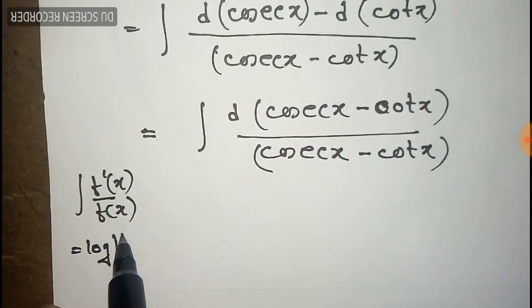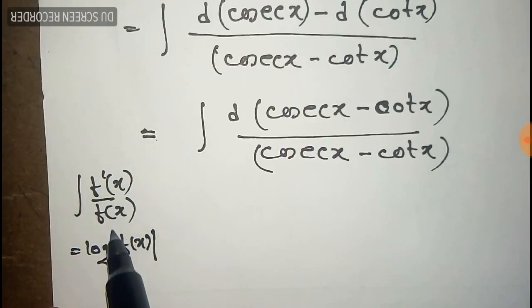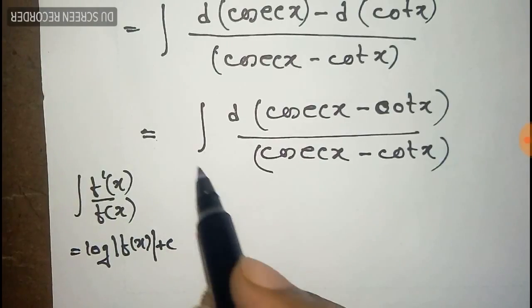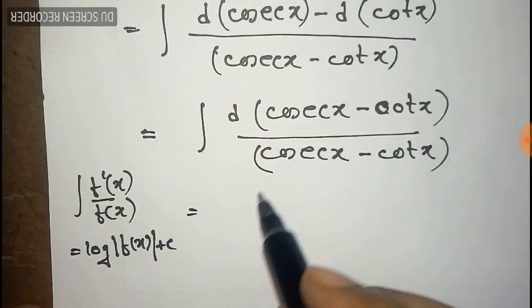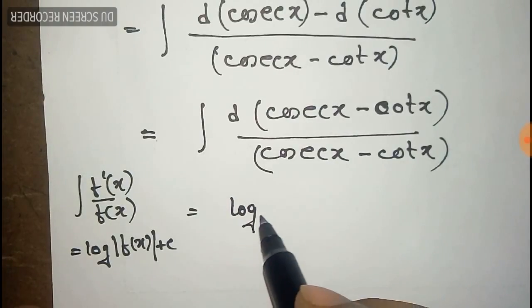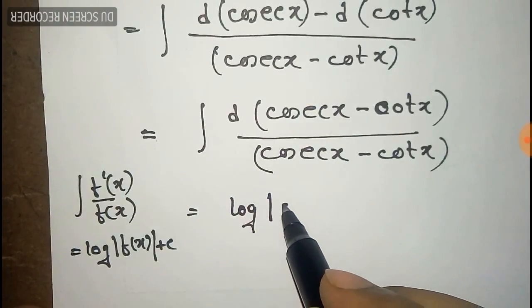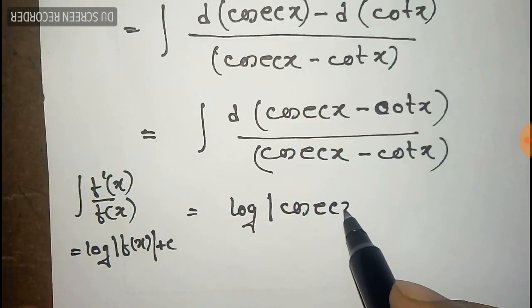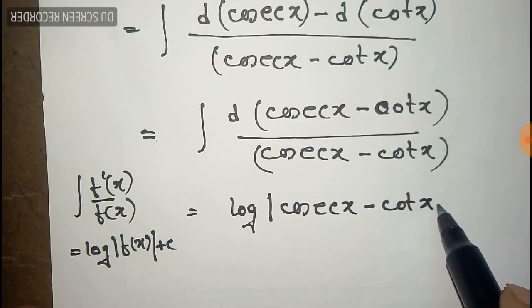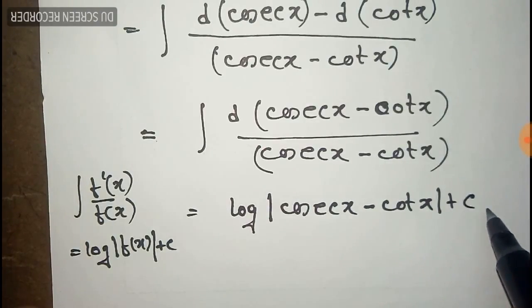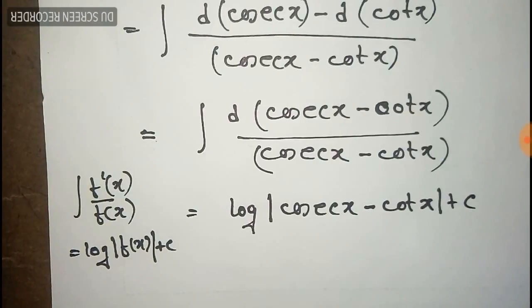Now we apply the formula: the integration of f'(x) divided by f(x) equals log of f(x) plus constant. Here f'(x) is the derivative of f(x), so we can apply this formula. After applying it, the result is log of cosec(x) minus cot(x) plus constant C, because the numerator is the derivative of the denominator.